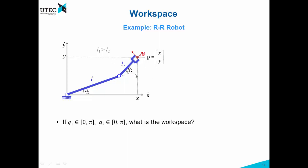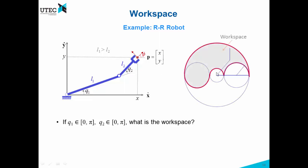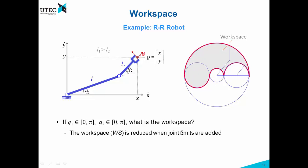So in this case, what's the workspace? The workspace is of course going to be different from the previous one, but how different? If it is completely horizontal and Q1 has no motion, then Q2 can only move from here to here because the angle just goes from zero to pi. Q1 is also restricted and cannot go further than this. At the end you will end up with this workspace shown in gray. The workspace is reduced when joint limits are added, and the analytic expression in this case is much more complicated.